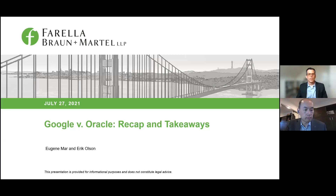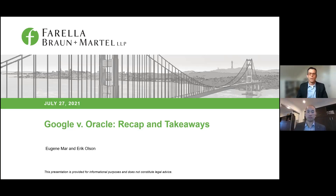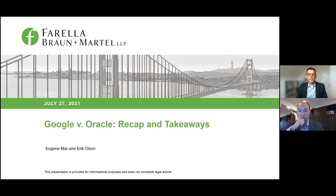This all starts when a company called Sun created the Java programming language and the Java Standard Edition, or Java SE, platform, which programmers can use to develop their own software programs. Google acquired a company called Android in 2005 to develop a software platform for mobile devices. About 6 million programmers knew Java at this time, mainly using it to develop programs for laptops and desktops. Google and Sun had discussions about Google licensing the entire Java software platform, but the talks broke down because Sun wanted all Android programs to be interoperable while Google wanted an open platform with very few restrictions.